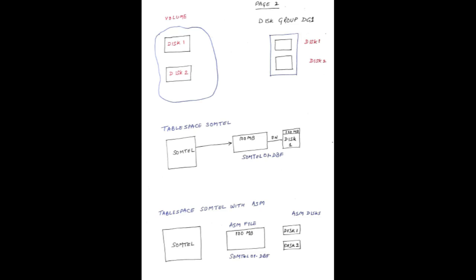The purpose of ASM is to stripe the data across many disks. Striping means distributing data among the disks. The second purpose is to mirror the data — like seeing your image in a mirror, it's a copy. Mirroring provides data protection, while striping does load balancing. So we stripe data into disk 1 and disk 2, and mirror disk 1 into disk 1A and disk 2 into disk 2B.